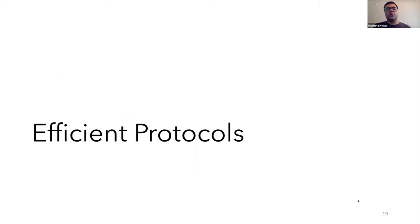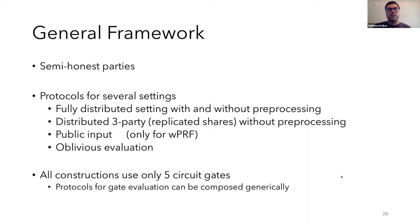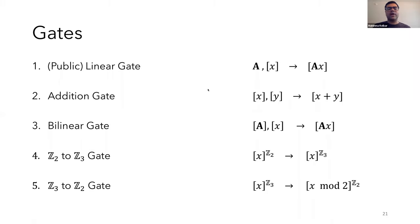I'll now move to describing efficient protocols to evaluate our candidate constructions. As mentioned before, we focus on the semi-honest setting and provide protocols for several distributed settings with and without preprocessing. And all of our constructions use just five types of gates and protocols for these gates can be generically composed to evaluate any candidate. So the five gates we use are pretty straightforward. The first three are commonly used simple, linear, and additive gates. And then we have two other modulus conversion gates to convert between shares in Z2 and Z3. So the Z2 to Z3 gate converts shares of X over Z2 to shares of the same X over Z3. And we'll provide efficient protocols for these modulus conversion gates.